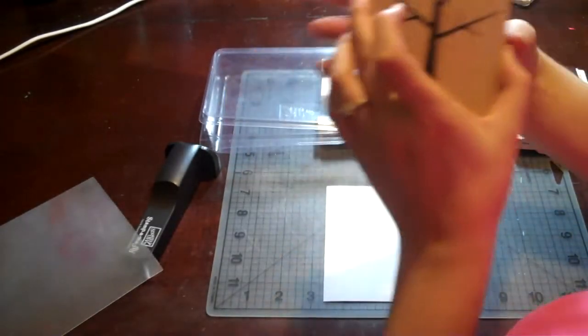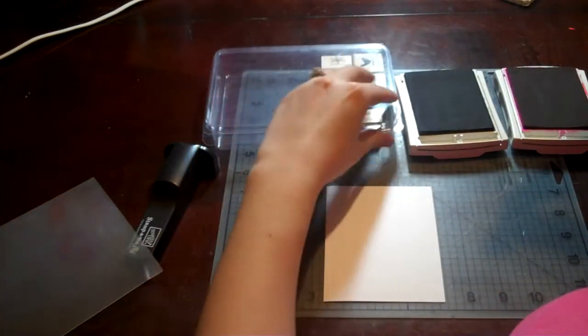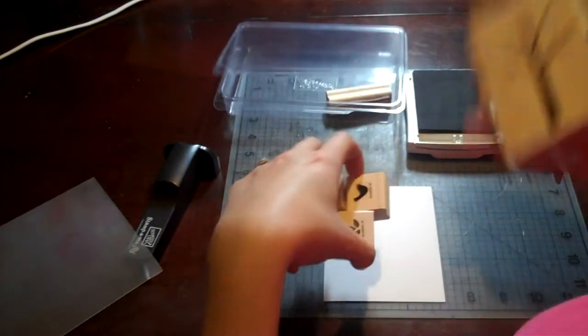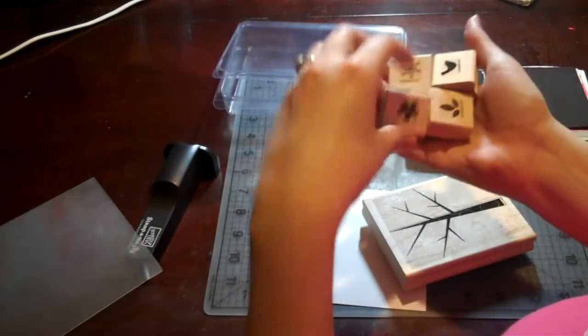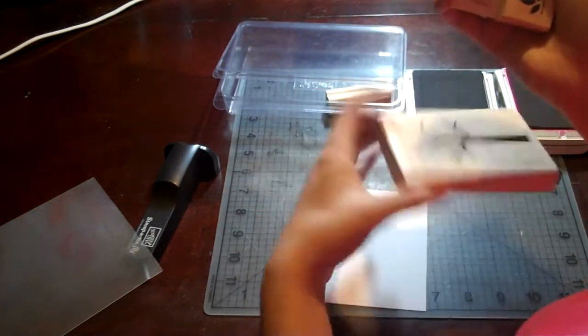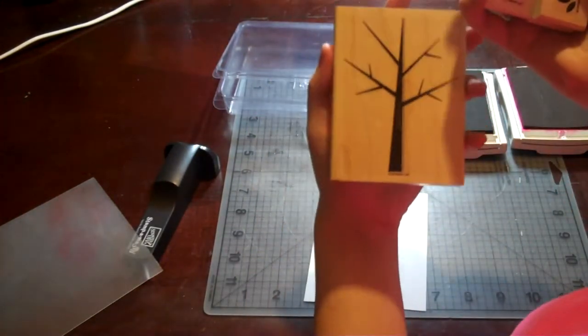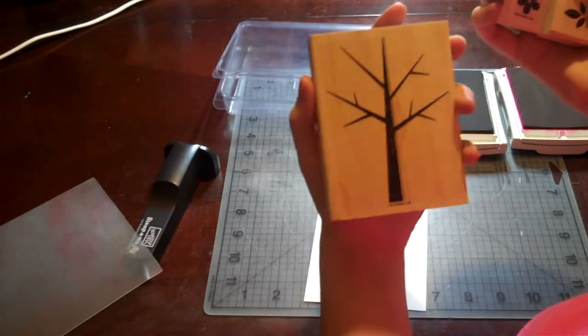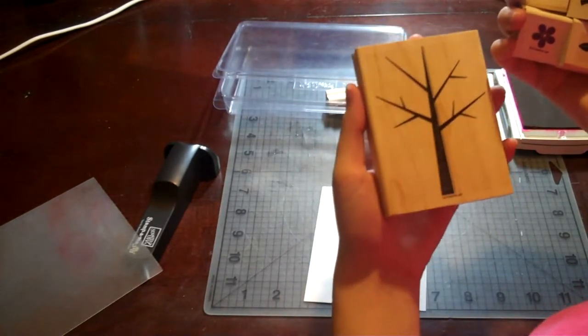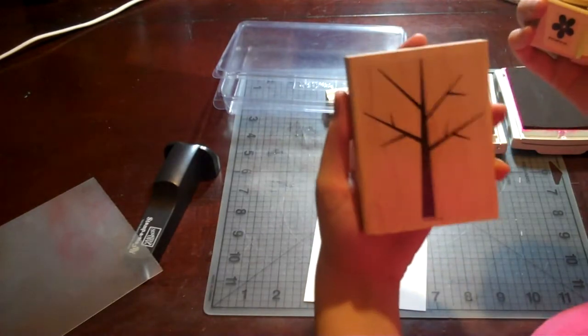What's neat about this stamp set is it comes with everything as far as accessories go. You can see these little stamps. They all coordinate with this tree, but if you don't have a Stampamajig, you can't place them exactly where you want them. So I'm going to show you how to use the Stampamajig to get your images exactly where you want them.